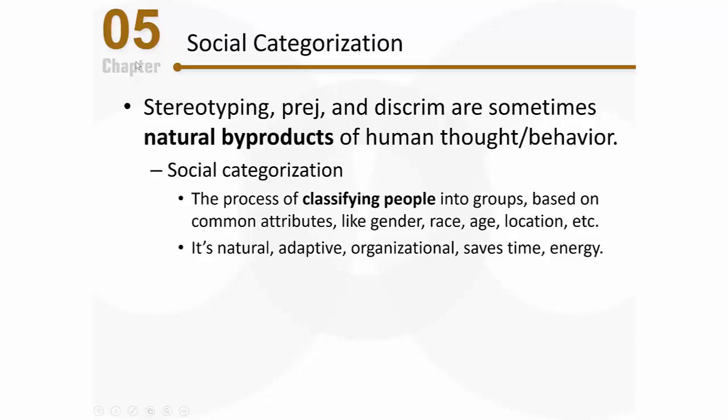The social categorization process is adaptive, and from an evolutionary standpoint, we can see that it is. People who have categorized others, situations, and other animals effectively have been more likely to survive and pass on their genes. For example, someone who classifies pit bulls as dangerous and avoids them is less likely to be harmed. But it's also possible there were some very sweet pit bulls that were judged unfairly — and there you see another example of the categorization process going awry.